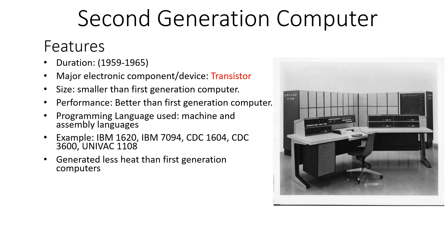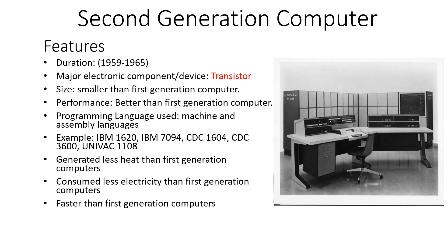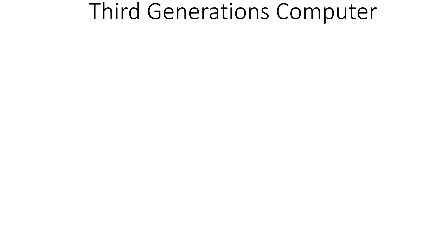Second generation computers generated less heat compared to first generation computers. They consumed less electricity, were faster than the first generation, but were also very costly, similar to first generation computers.